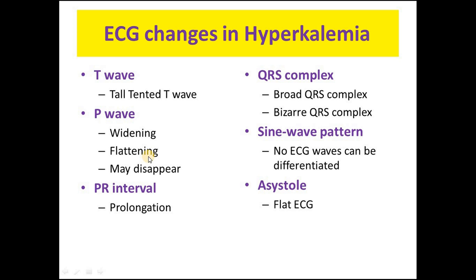The next change occurs in the P wave. The P wave starts to flatten, there is widening of the P wave, and sometimes the P wave may even disappear. The next change is in the PR interval — there is prolongation of the PR interval. The QRS complex also starts to get broad and bizarre.